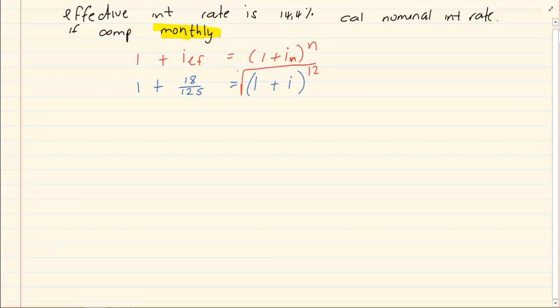You are going to 12 root and what you do on one side, you do on the other side. Take the 1 over, so I am going to subtract. So I am going to say 1.0112 subtract 1 which is equal to 0.0112 is equal to i. Now we know the interest rate.